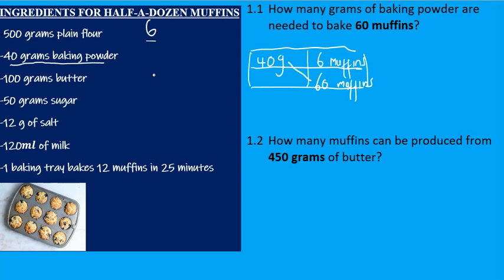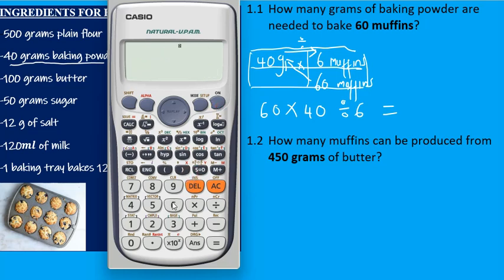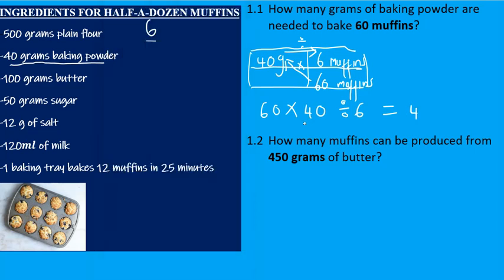Using the crisscross method, you multiply across and then divide sideways: 60 × 40 divided by 6 gives you 400. So you will need 400 grams of baking powder to bake 60 muffins.